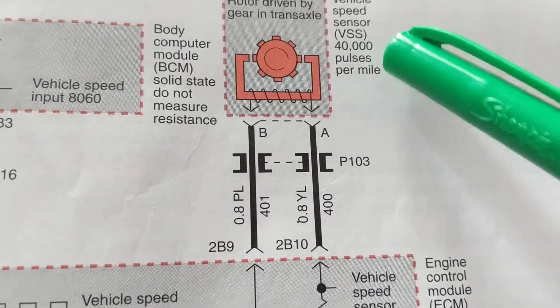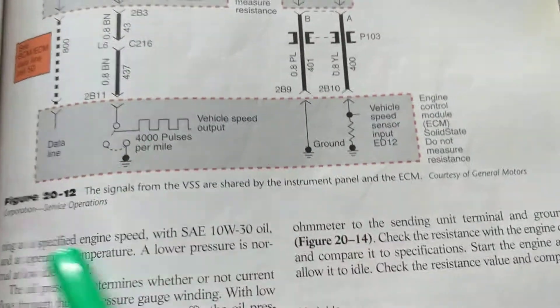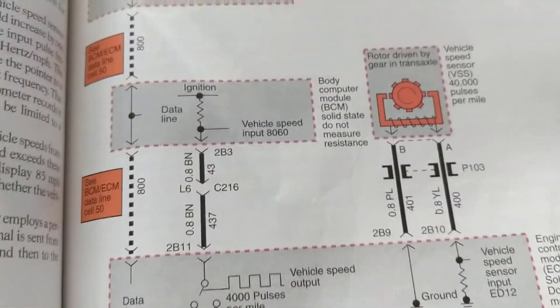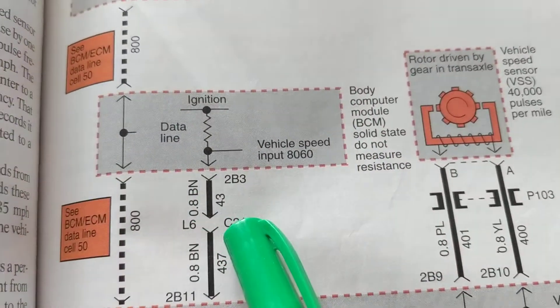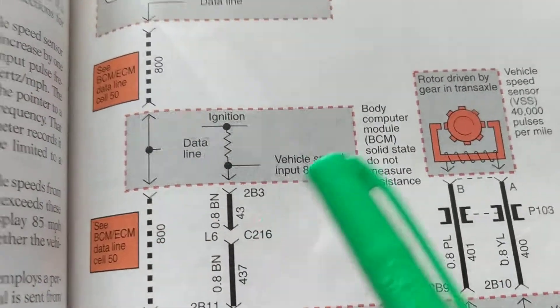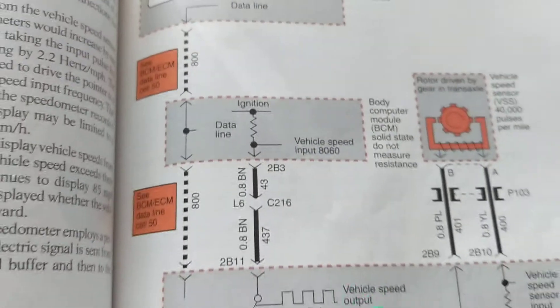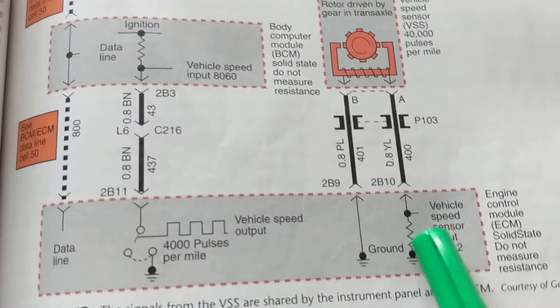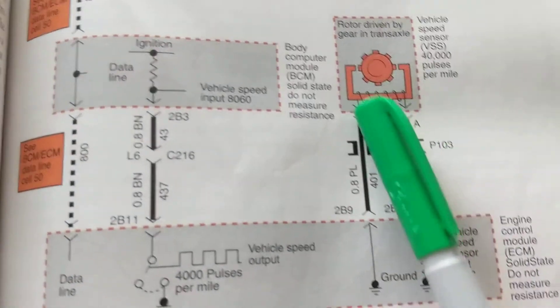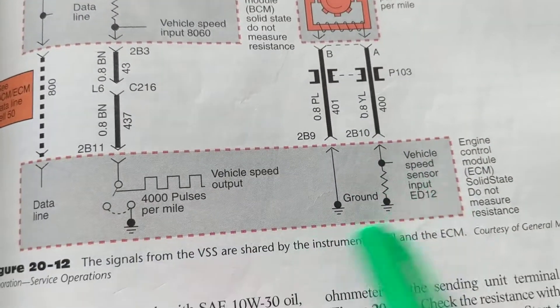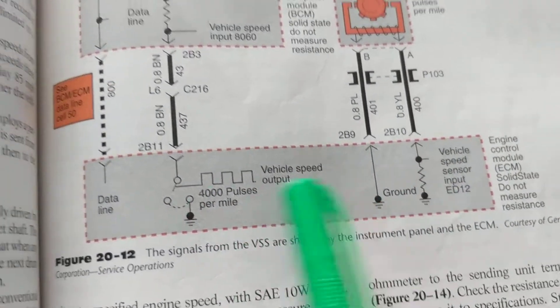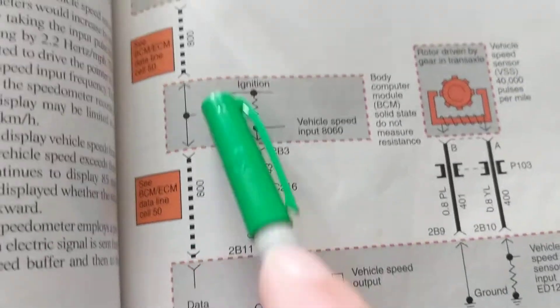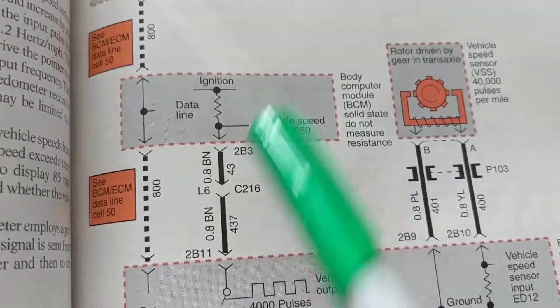This is the engine control module, the brain. This is the body control module, and this is the instrument cluster. This one is getting information from the transmission about how many pulses per mile to the computer. The computer takes this information and gives it to the instrument cluster, but it's also communicating with the body control module.